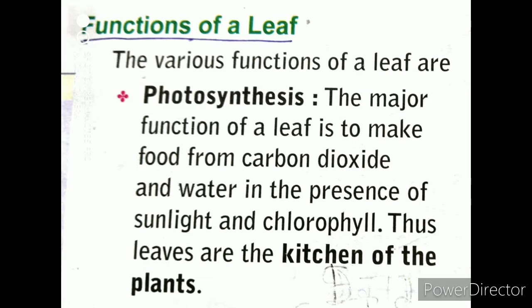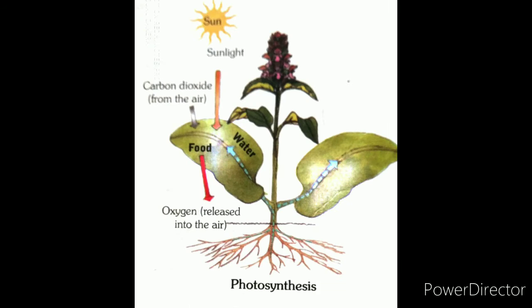to make food from carbon dioxide and water in the presence of sunlight and chlorophyll. This process is known as photosynthesis. In the photosynthesis process, food is prepared in the leaf. For food preparation, carbon dioxide and water are required, and this process takes place in the presence of sunlight. The green pigment chlorophyll also becomes compulsory for this process.